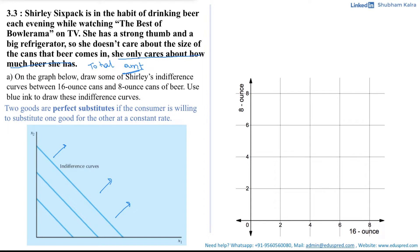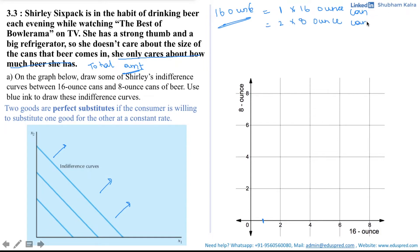We want to draw the indifference curve for Shirley where on the graph we have 16-ounce cans on the X-axis and 8-ounce cans on the Y-axis. Suppose Shirley wants to have a total of 16 ounces. She could have one 16-ounce can and zero 8-ounce cans, or she could have two 8-ounce cans giving her a total of 16 ounces and zero 16-ounce cans. Since the goods are perfect substitutes, both options give her the same level of satisfaction, so they lie on the same indifference curve.